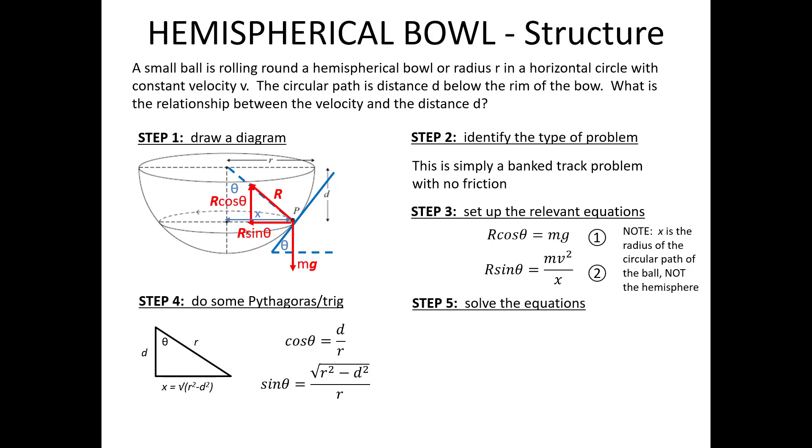So let's solve these equations. Equation one can be rearranged that way. Notice that I've replaced cos θ with d over r. And I can now substitute that value of R into equation two. You can work through the algebra yourself. But when you get to that point, you will see that I can now cancel out the m's on both sides, cancel out the r's on the left hand side of the equation, and then rearrange to get v squared as that.